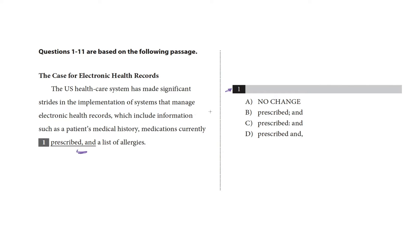So there's our underlined portion, and what's changing here in these choices is all punctuation, it looks like. Choice A, the no-change option, has a comma between 'prescribed' and 'AND.' Choice B replaces that comma with a semicolon. Choice C replaces that comma with a colon. And choice D puts the comma after the AND.